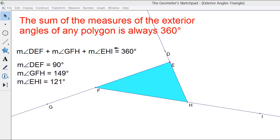This video will be a demonstration of the theorem that the sum of the measures of the exterior angles of any polygon is always 360 degrees.